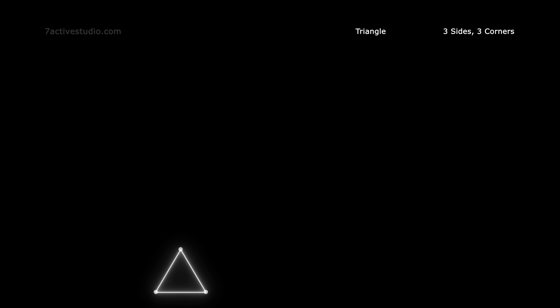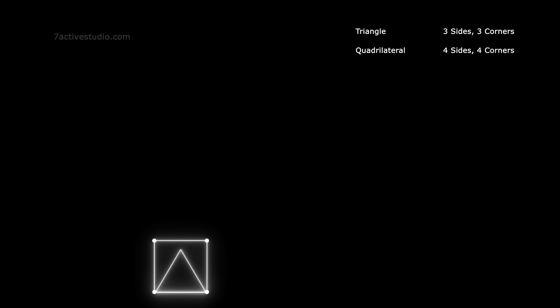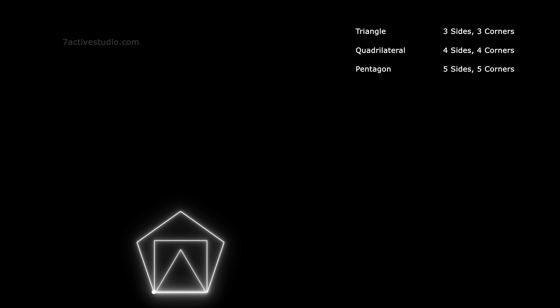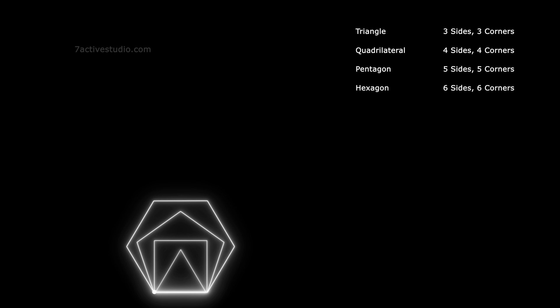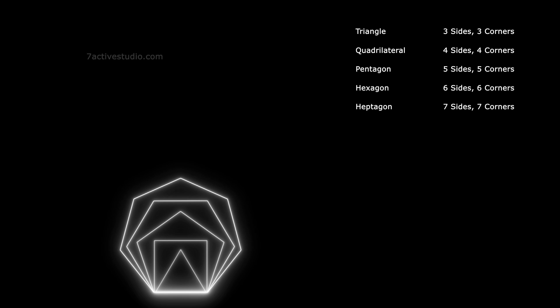Shapes. Triangle: three sides, three corners. Quadrilateral: four sides, four corners. Pentagon: five sides, five corners. Hexagon: six sides, six corners.